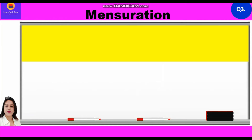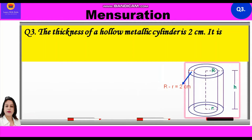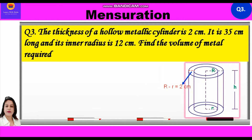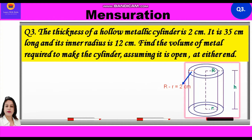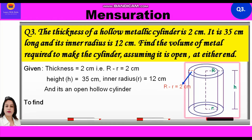Let us take up question number 3. The thickness of a hollow metallic cylinder is 2 centimeter. It is 35 centimeter long and its inner radius is 12 centimeter. Find the volume of metal required to make the cylinder, assuming it is open at either end. So, given in this question, thickness is equal to 2 centimeter, that is capital R minus small r is equal to 2 centimeter. Height h is equal to 35 centimeter, and inner radius r is equal to 12 centimeter. It is an open hollow cylinder and we have to find the volume of metal required.